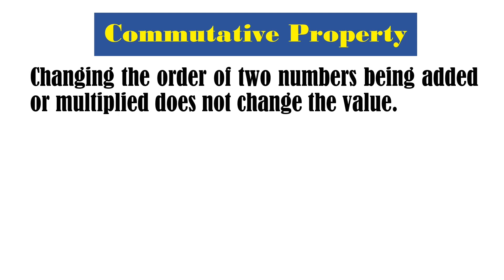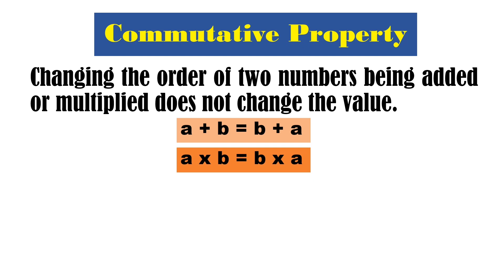Next is the commutative property. Changing the order of two numbers being added or multiplied does not change the value. Ibig sabihin, kahit pagpalitin natin yung order ng dalawang numbers, hindi magbabago yung result. So in addition, A plus B is equal to B plus A — pinagpalit natin si A and B, parehas pa rin yung sagot. In multiplication, A times B is equal to B times A — pinagpalit ulit natin yung factors, parehas pa rin yung sagot.